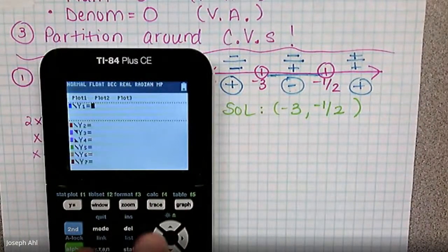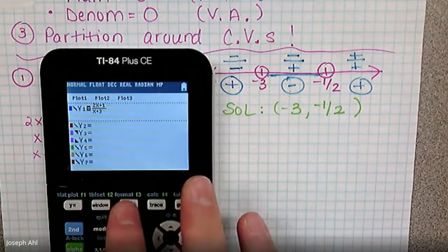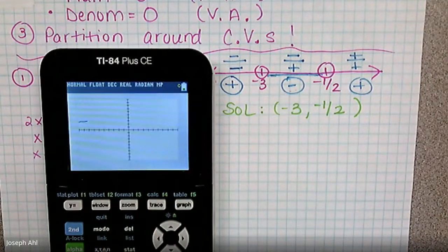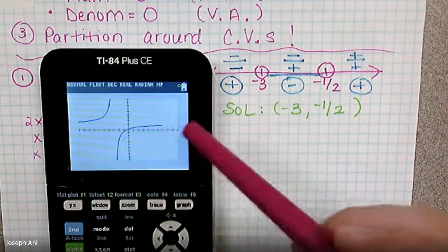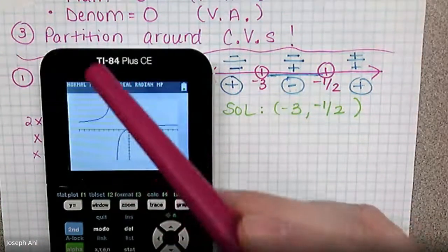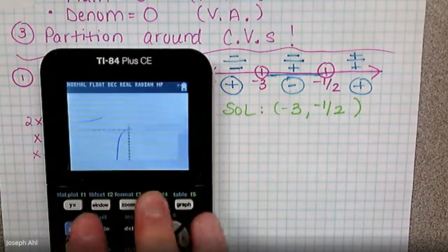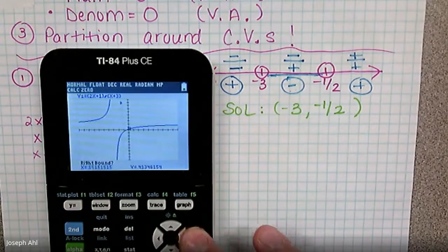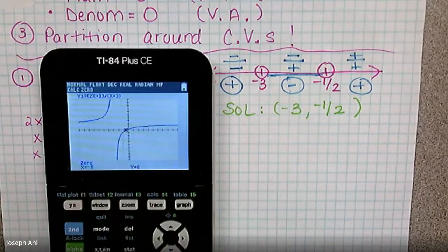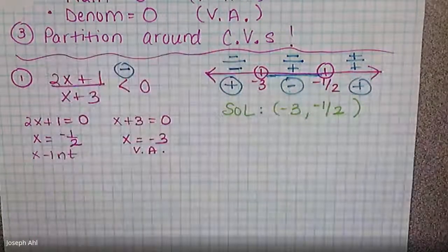In the calculator, press Alpha Y= to make a fraction in Y1 with two x plus one in the numerator and x plus three in the denominator. Using Zoom 6 to check: the vertical asymptote is at negative three, and I can confirm the root is at negative one-half using Trace, Second Trace, calculate zero — entering left bound, right bound, and guess — which gives negative 0.5. After solving algebraically, you can always verify graphically.